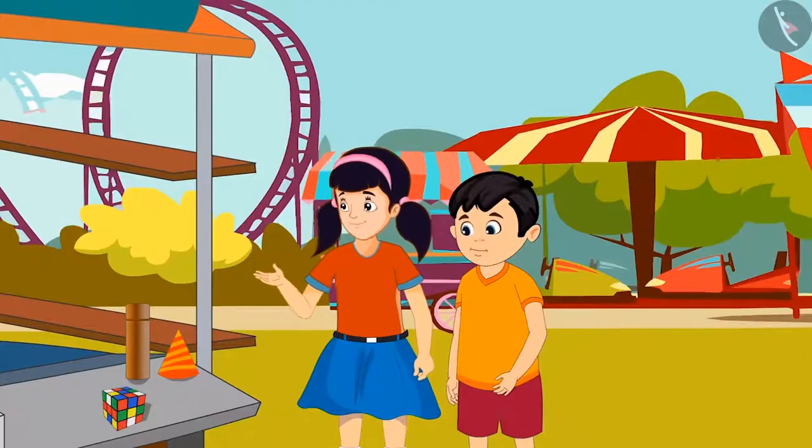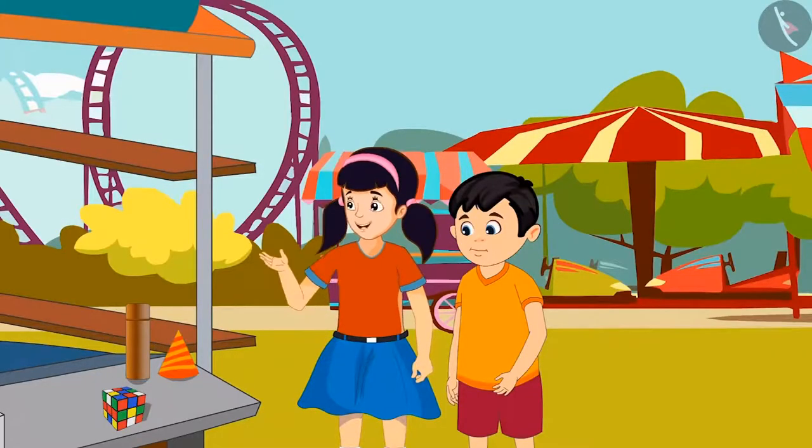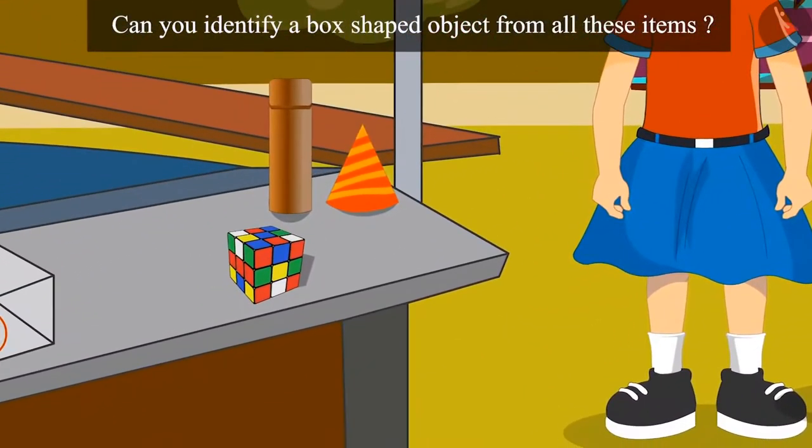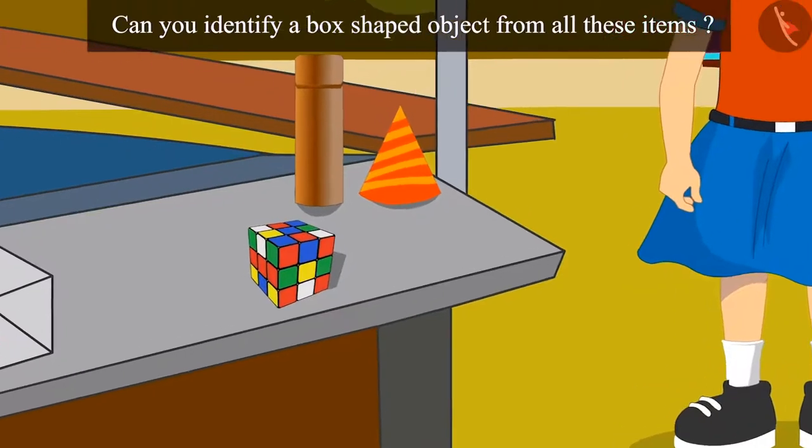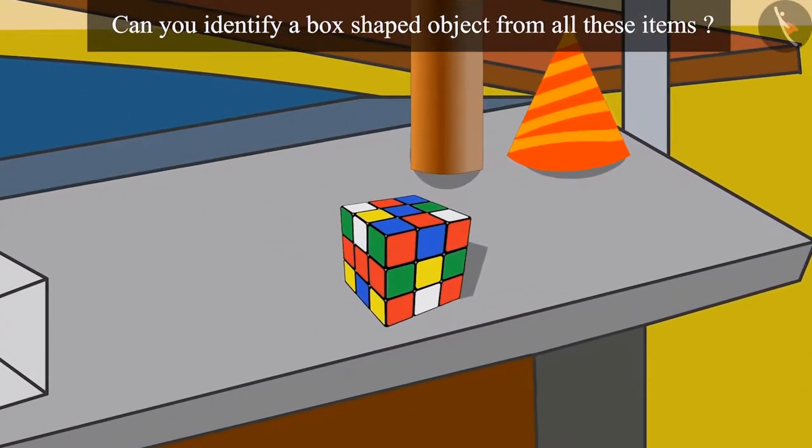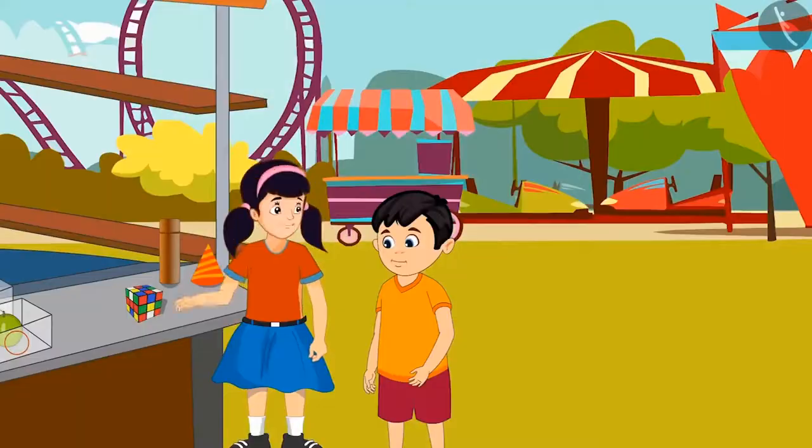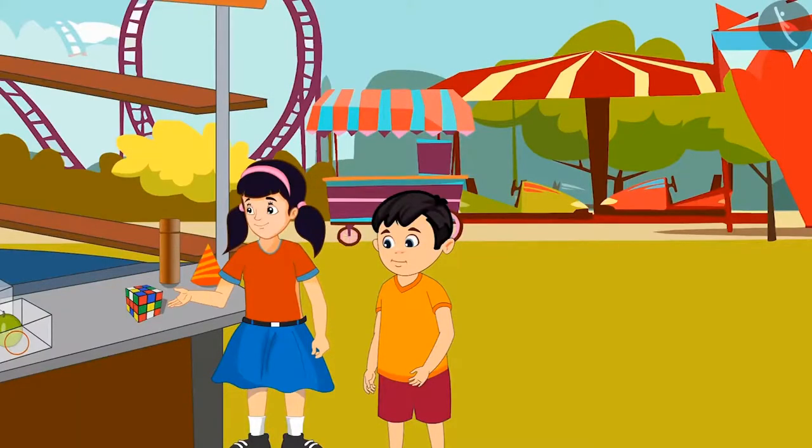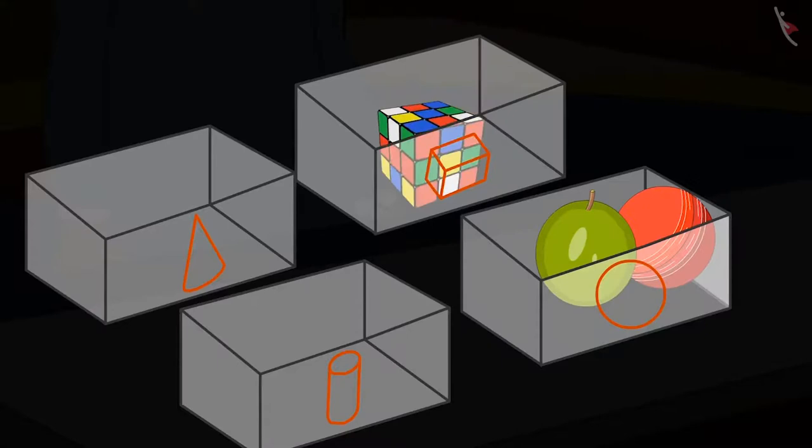Come on Chotu, now let's look for items that have a box-like shape. Children, can you identify a box-shaped object from all these items? Right children, here is an object which looks like a box. Got it. Here it is. Now let's put it in this box.